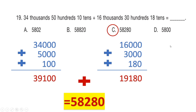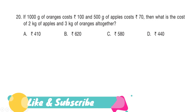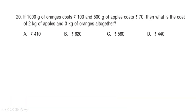Next question: If 1,000 grams of oranges cost ₹100 and 500 grams of apples cost ₹70, then what is the cost of 2 kg of apples and 3 kg of oranges altogether? Is it option A: ₹410, option B: ₹620, option C: ₹580, or option D: ₹440? Your time starts now.